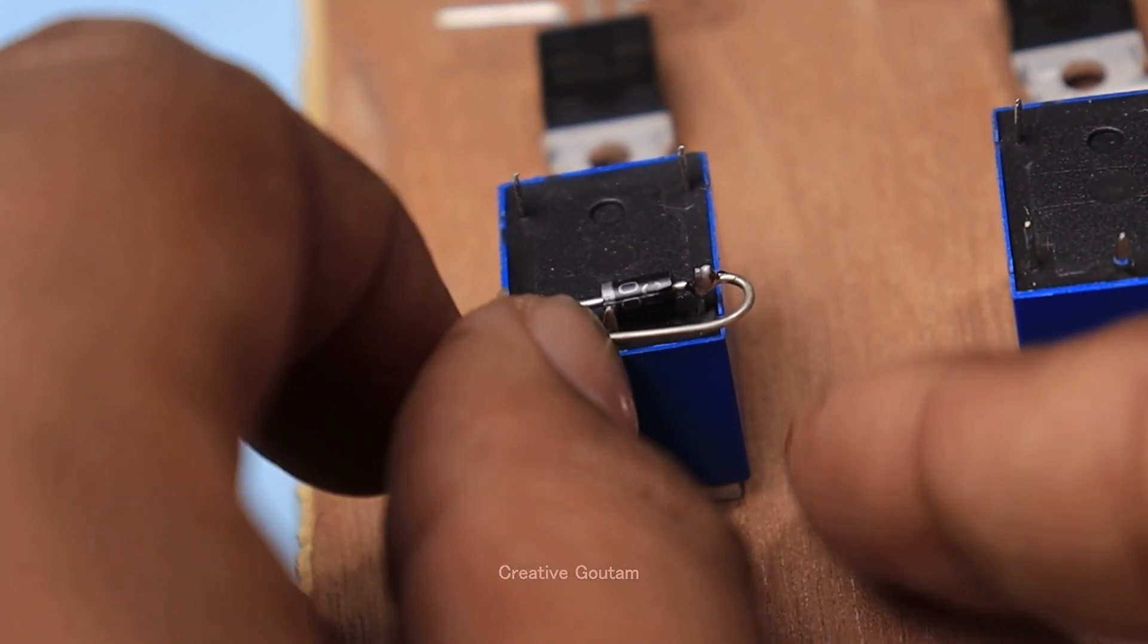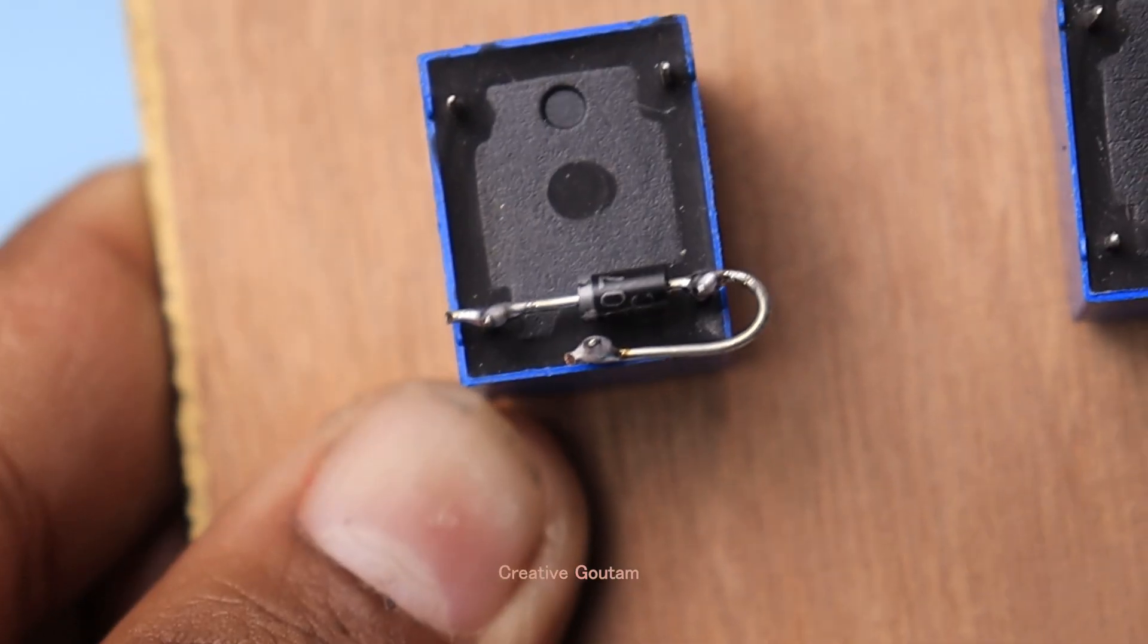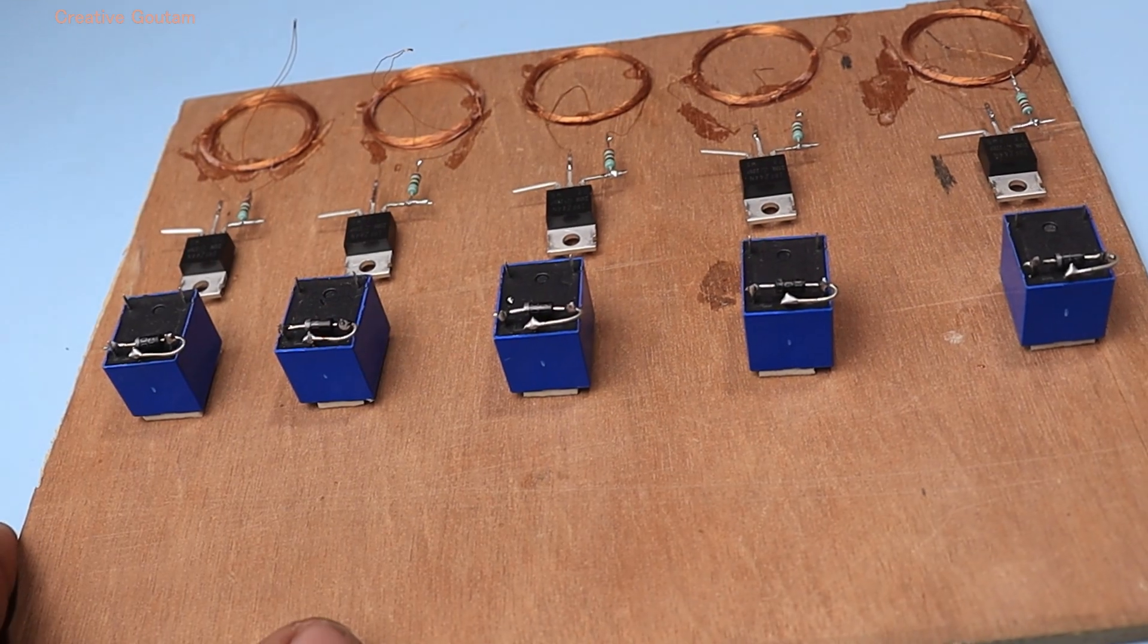The anode side of the diode connected to the common pin of the relay. I do this for all relays.